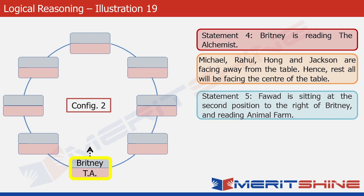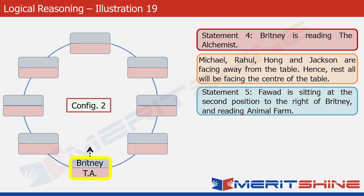Statement five says that Fawad is sitting at the second position to the right of Brittany. The second position to Brittany's right gives us Fawad's cell. Since Fawad is reading Animal Farm, let's write AF here. Fawad also must be facing the center of the table, since he is not among the four facing away — Michael, Rahul, Hong, and Jackson.